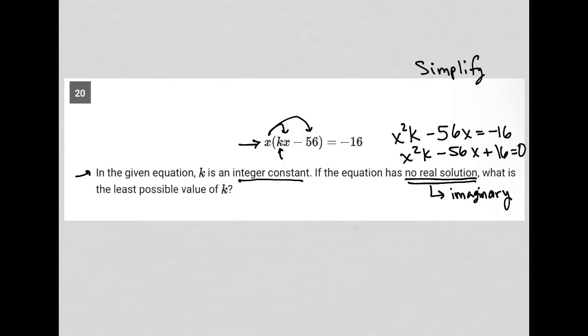We deal with this using the discriminant, which tells us that b² - 4ac, when less than 0, gives no real solution.